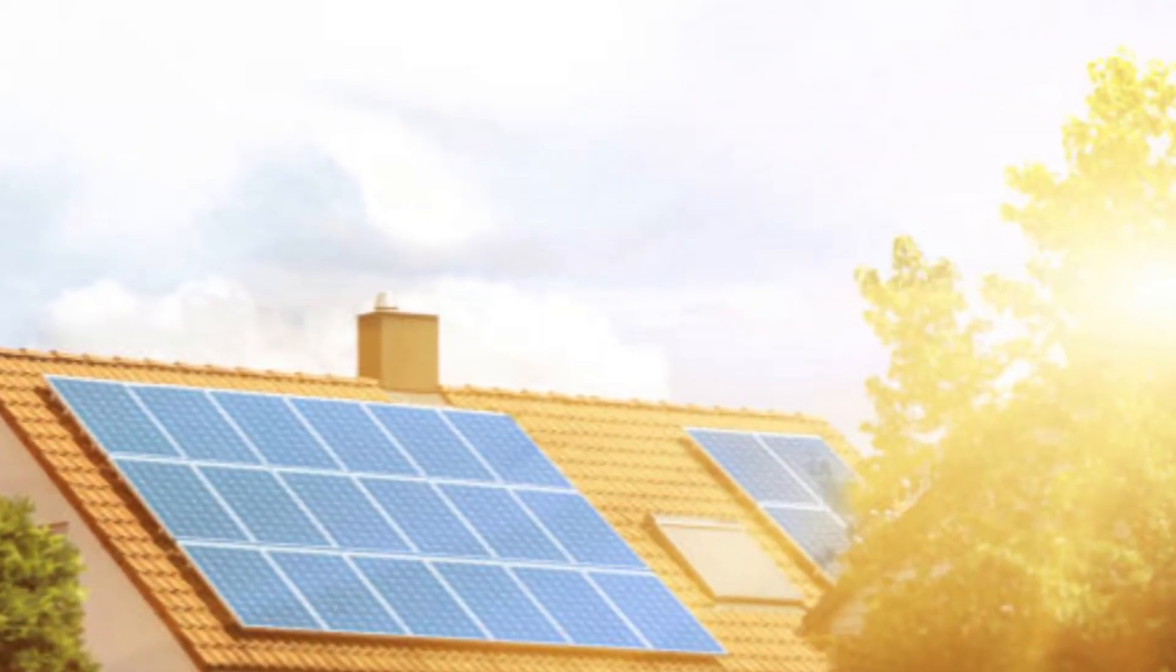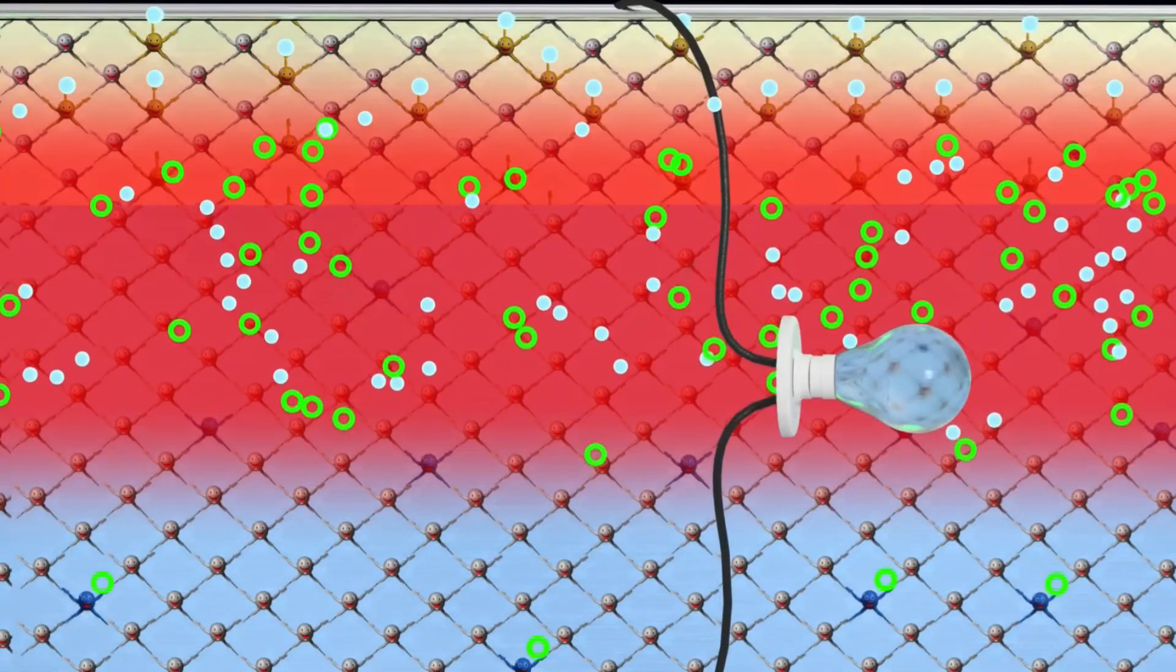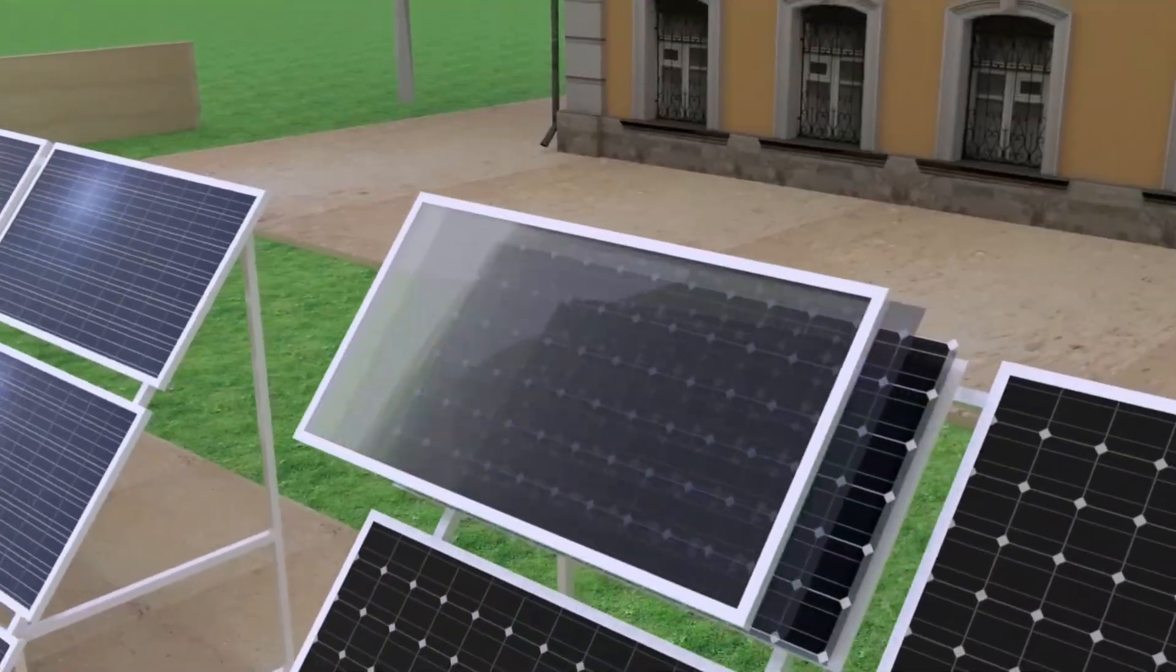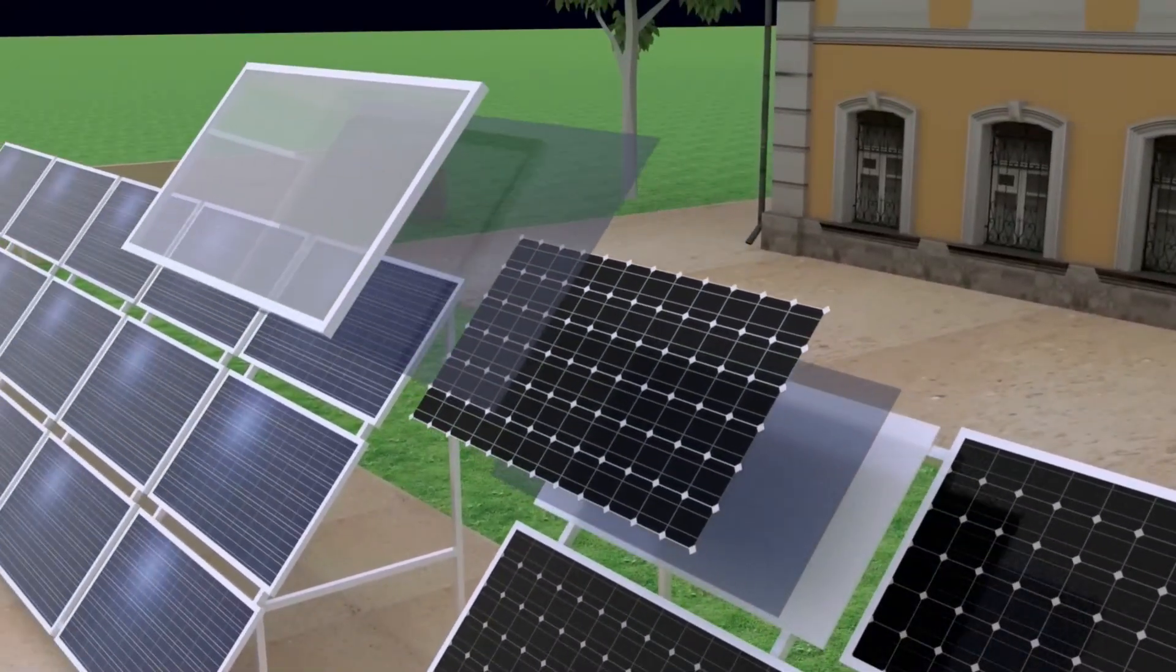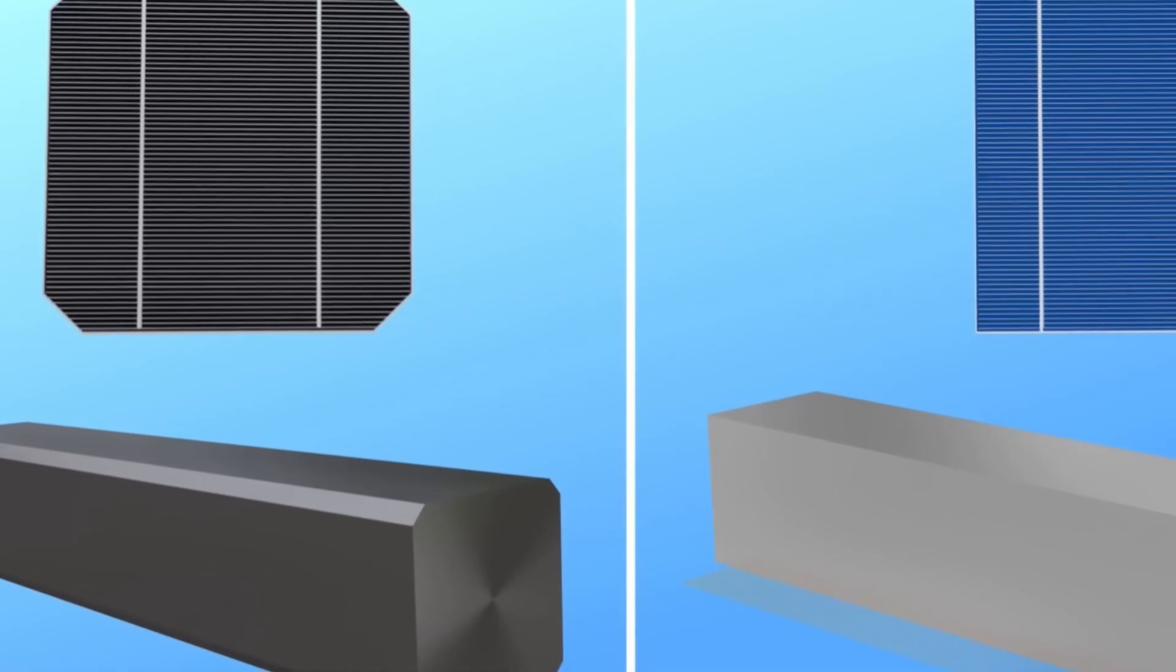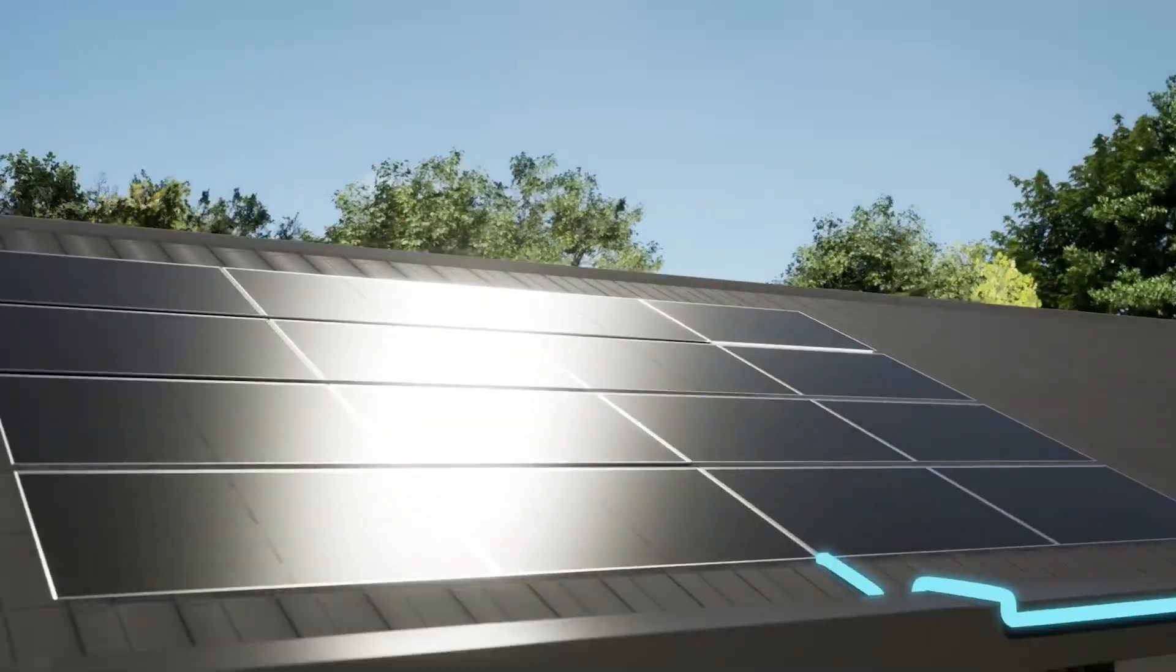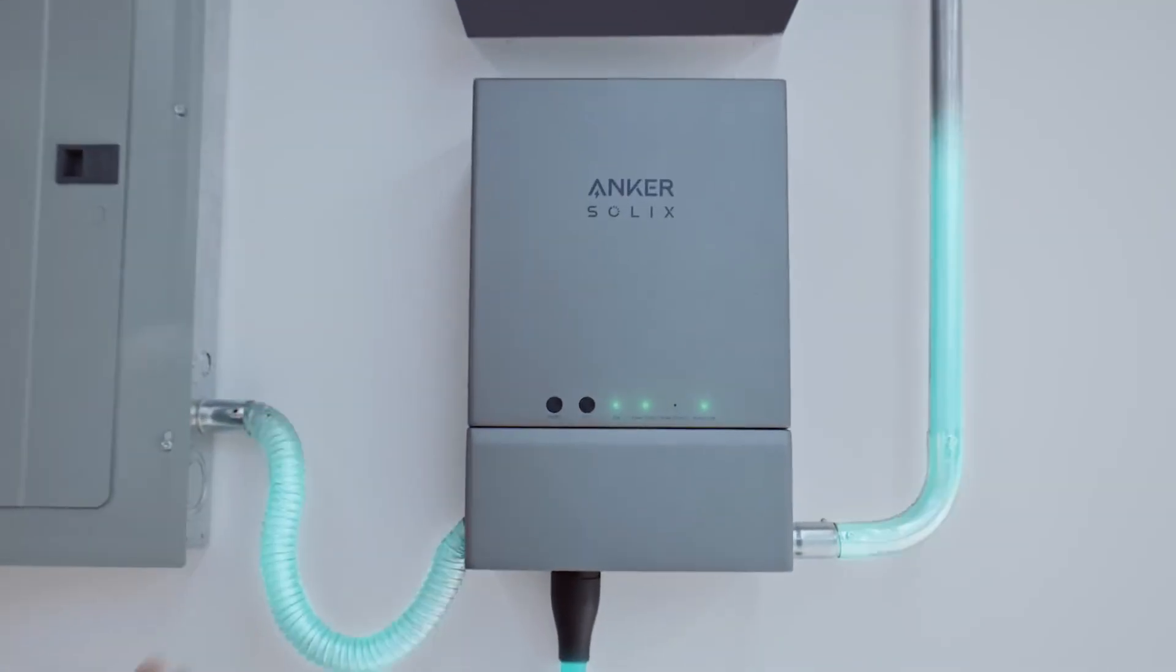That means you could charge the material during the day and release the stored energy on demand at night, without needing an external battery. And here's a fun detail. When the material absorbs light and stores energy, its color changes from yellow to brown. So you can literally see when it's charged. This leads us to a very cool concept in energy storage science – pseudocapacitants.